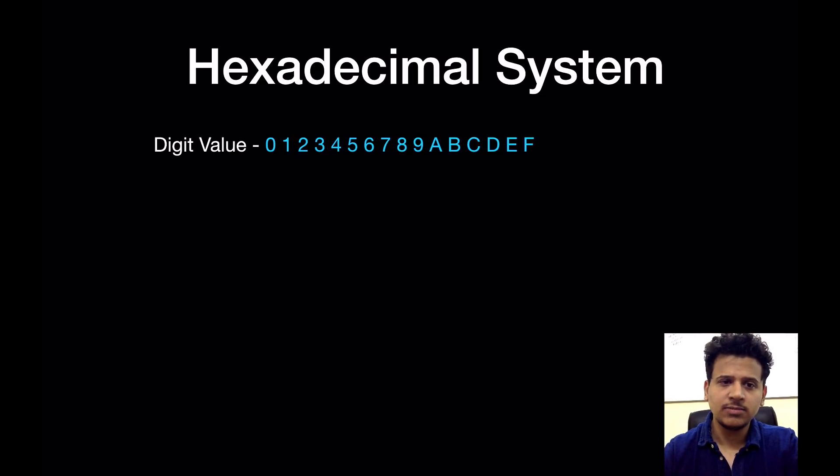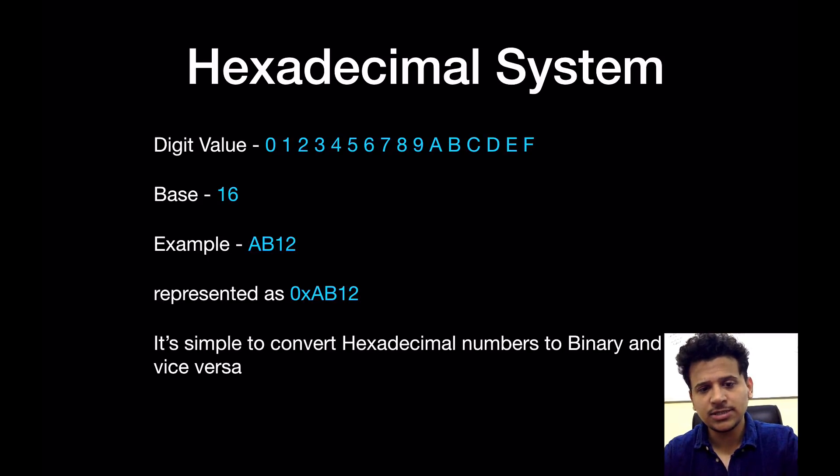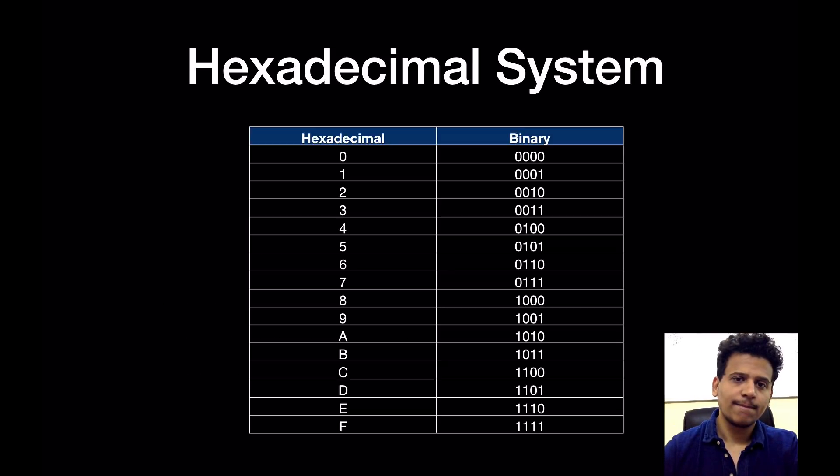Next we look at the hexadecimal system. In the hexadecimal system, the digit value is 0 to 9 and A, B, C, D, E, F, so the base is 16. That means we can assign 16 different symbols to a single digit. Example is AB12, and this can be represented as 0xAB12. Why we need a hexadecimal system? Because it's really simple to convert hexadecimal number to its binary equivalent and vice versa.